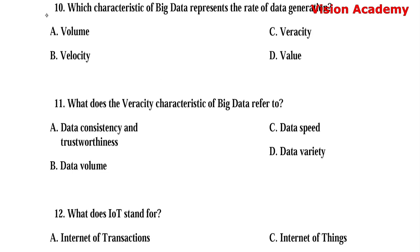Question number 10. Which characteristic of big data represents the rate of data generation? Option A: Volume. Option B: Velocity. Option C: Veracity. Option D: Value. Here, option B, velocity, is the right answer.